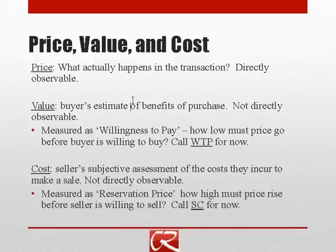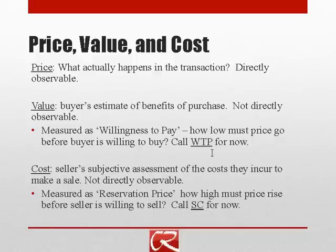We usually measure value through the idea of willingness to pay. Because we can't directly observe how much psychological benefit someone gets from a purchase, we can get an idea of how much it matters to them by looking at how much they're willing to pay — the maximum price they're willing to pay. We could start with a really high price, gradually bring it down, and once the person becomes willing to buy, that's a signal of how much they value it. I'll often abbreviate this as WTP.